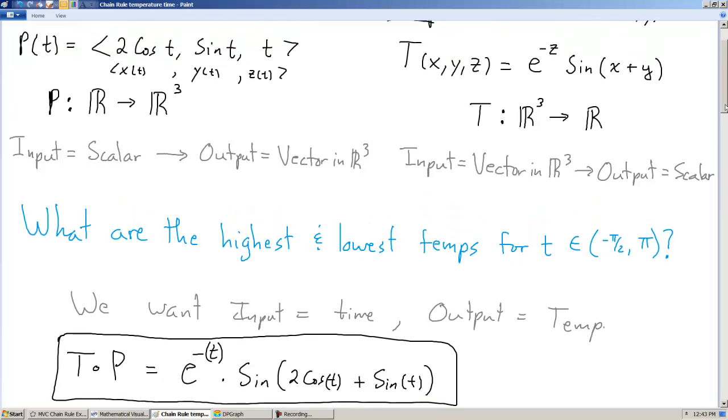The way that we do that is to say, here's our temperature of x, y, and z. And I know that each variable x, y, and z each relies on t. So everywhere I see z, I'm going to put in whatever the z coordinate was, the z function was. And that's just t. Wherever I see x, I'm going to put in two cosine of t.